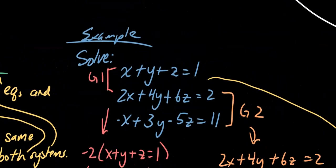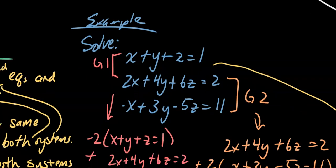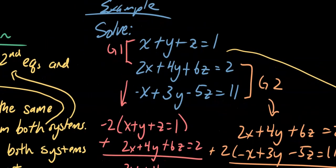Let's go over it with an example. Say we have this three-variable system: x plus y plus z equals 1; 2x plus 4y plus 6z equals 2; negative x plus 3y minus 5z equals 11. We split it into two groups — G1 is the first two equations, G2 is the second two equations. If you don't know how to solve a two-variable system, review your Algebra 1 notes.